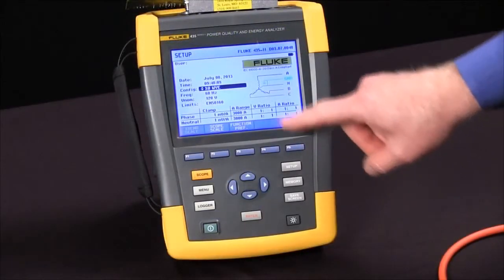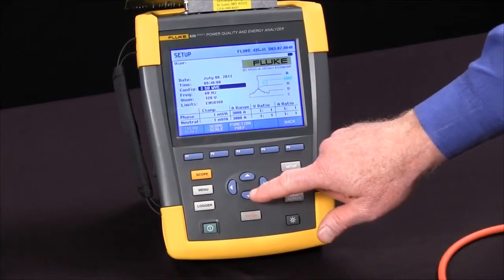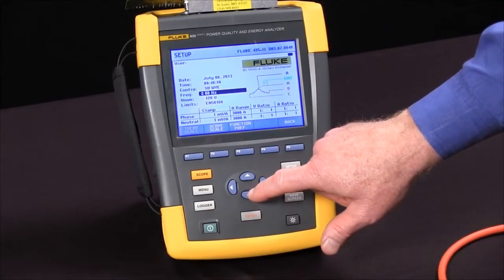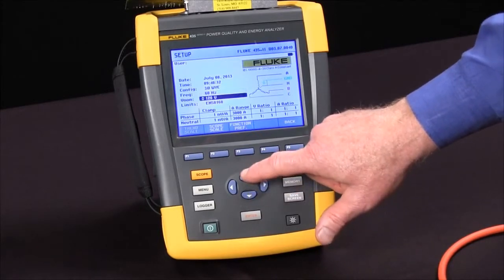Once we've done that, we'll see a black field on the screen that we can move with our arrow keys up and down. You can select nominal frequency, nominal voltage, etc.